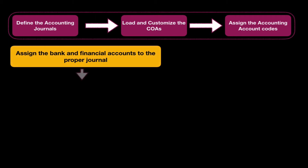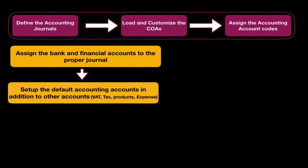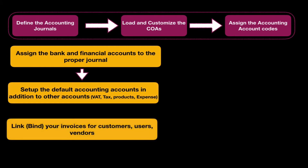Then we will set up the default accounting accounts. As we saw in the accounting setup, we will assign the default accounting account. These are the accounts Doliver will use in case a product does not have an accounting account or a code assigned — Doliver will use this default account to log the transactions for that customer, that product, or whatever.